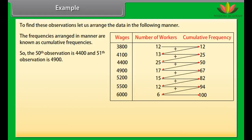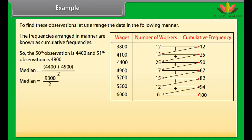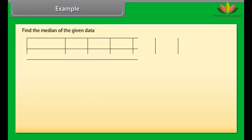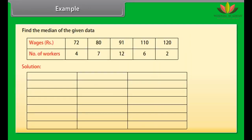Median equals (4,400 plus 4,900) divided by 2, equals 9,300 divided by 2, equals 4,650. This means 50% of workers got wages less than Rs. 4,650 and the other 50% got more than Rs. 4,650.